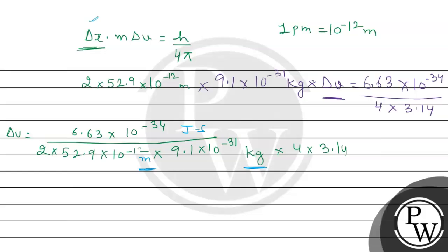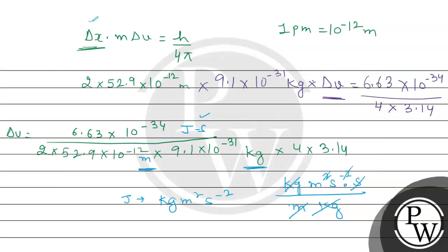Joule is kg·m²/s², so Planck's constant in full units is kg·m²·s⁻¹. Dividing by meters and kilograms, the kilograms cancel and one power of meters cancels, leaving m/s — which is velocity. So the units are correct and the result will be in meters per second.